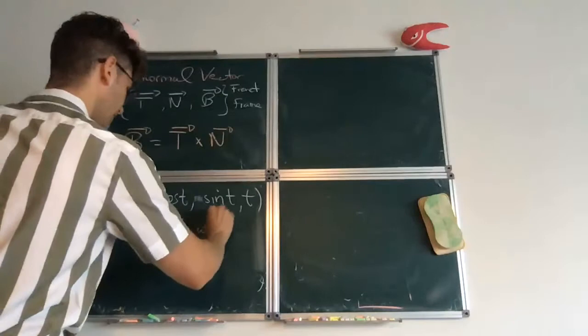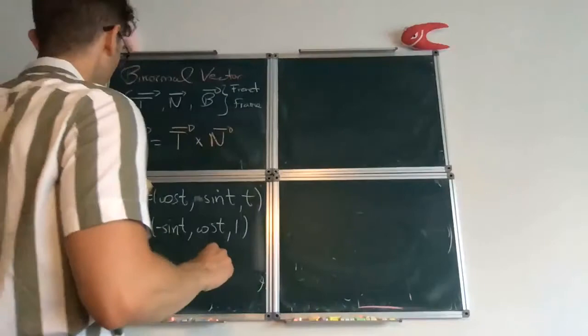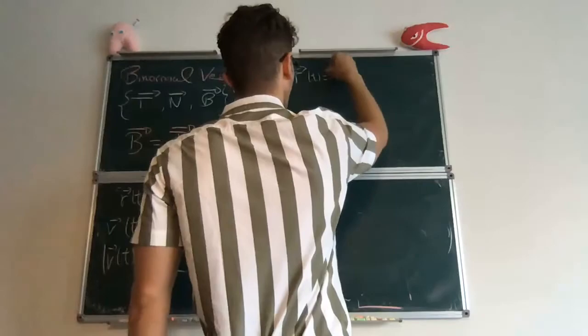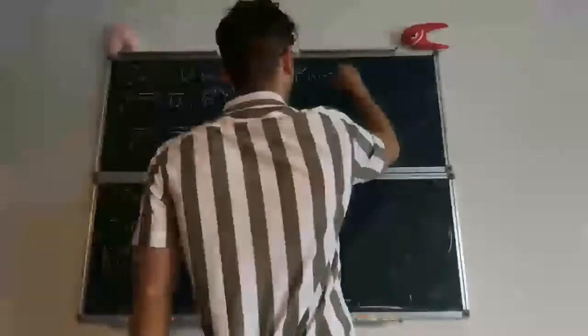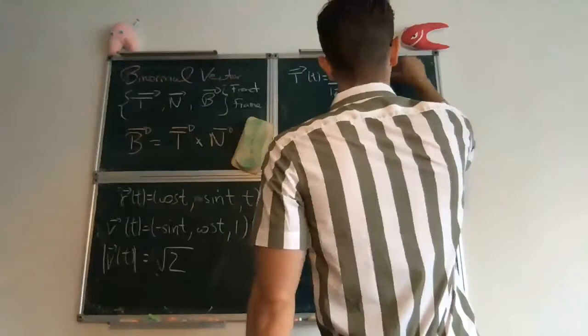Which is minus sine of t, cosine of t, and this is 1. Then it requires the speed, right? Which is, well, in this case, it's the square root of sine squared plus cosine squared plus 1, so that gives you the square root of 2. Then the tangent vector is just the velocity over speed. Just 1 over root 2 of the velocity.